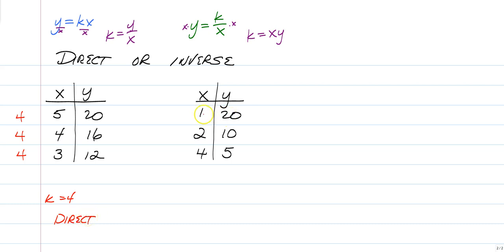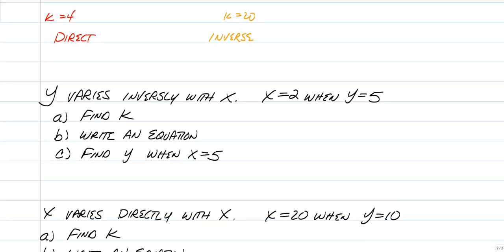We'll try that again. 20 divided by 1 is 20. 10 divided by 2 is 5. 5 divided by 4 is 5 fourths. So this is not direct. Let's go try inverse. K is equal to XY. 1 times 20 is 20. 2 times 10 is 20. 4 times 5 is 20. So when we multiply X and Y, we get K. So K is equal to 20, and this one is inverse. All right, now if you tried both of those, if you tried dividing Y by X, and then multiply X and Y, and none of them have the same pattern, that just means that there's no variation at all.